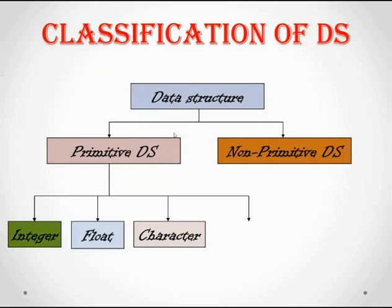The third primitive data structure is float, which is used to represent fractional numbers or numbers with decimal figures. The fourth and final one is Boolean, which can take only two values: true or false. Boolean is normally used for conditional testing.